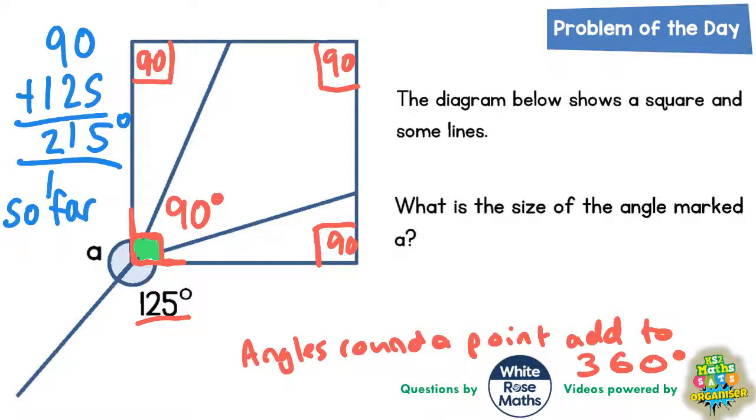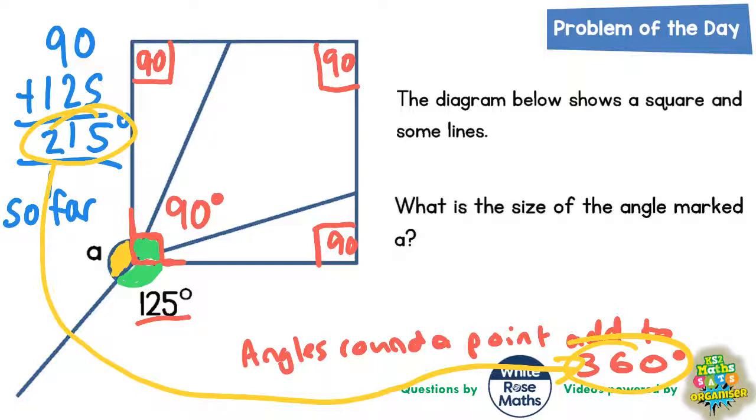But remember what we've just said is that angles around the point, so that 215 degrees accounts for the right angle and this 125 degrees here. So the extra angle, which is the yellow one that I'm now shading in, angle A, must be whatever takes 215 up to 360, because the total needs to be 360.